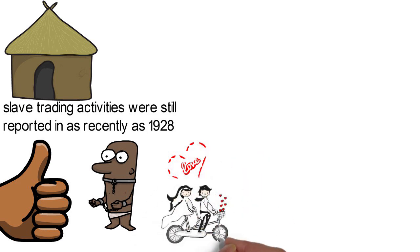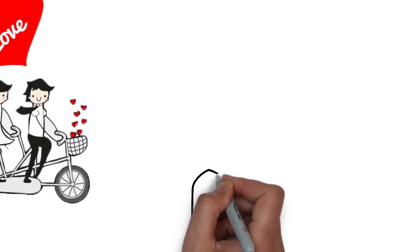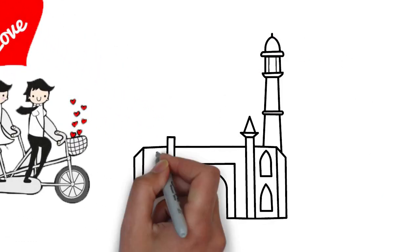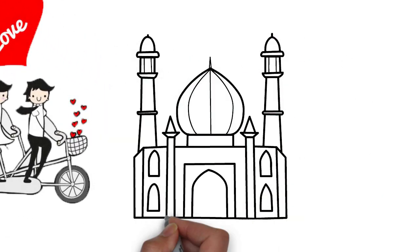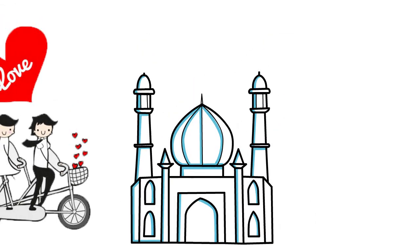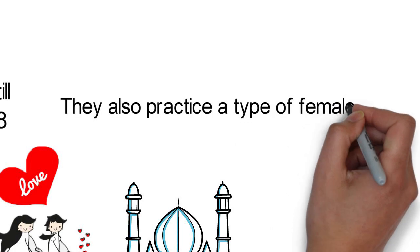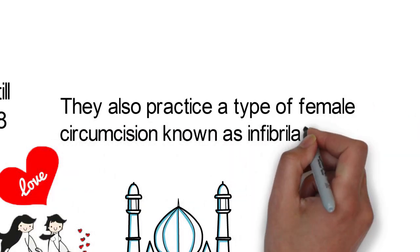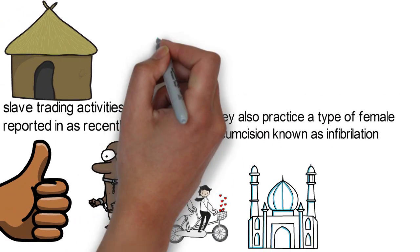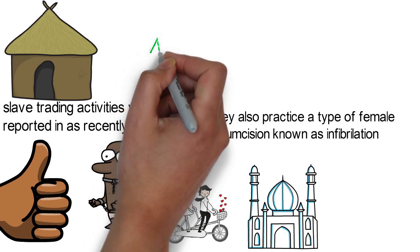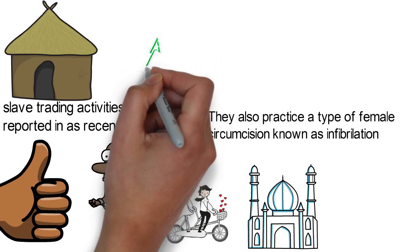When it comes to marriage preference, it is usually between first cousins. Afar women usually go bare-breasted, which is unusual for people who profess to be Muslims. They also practice a type of female circumcision known as infibulation. This is the sewing together of the female vulva. Similarly, boys too get circumcised when they come of age.